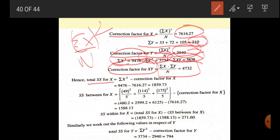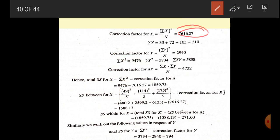Total SS formula for X is summation of X square minus correction factor for X. SS between for X is 49 square by 5 plus X2 square plus X3 square by 5 minus correction factor of X, which is 7616.27. SS within for X will be total SS for X minus total SS between for X, which equals 271.60.